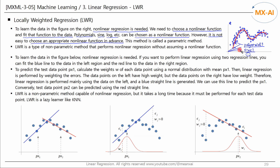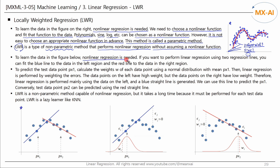This is called parametric methods. LWR is a type of nonparametric method that performs nonlinear regression without choosing a nonlinear function. To learn the data in the figure below, nonlinear regression is needed. We have training data like this.